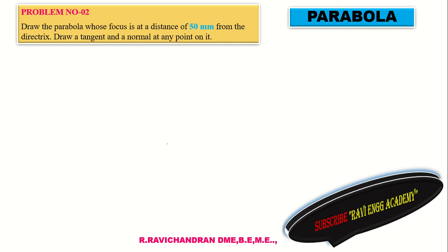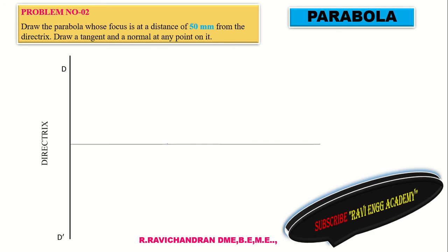The distance from the directrix to the focus is 50mm. First step: draw a vertical line. This line is named the directrix - it is a fixed state line, named with letters D-D'. From the directrix line, measure 50mm horizontally to locate the focus point. Draw a horizontal line and mark the focus point F.